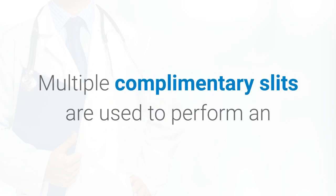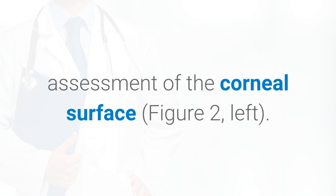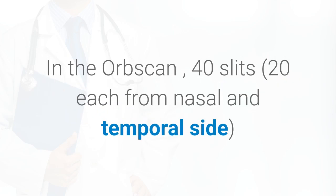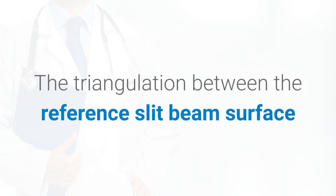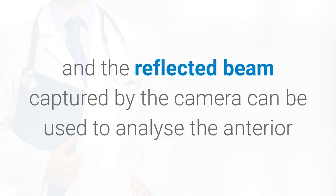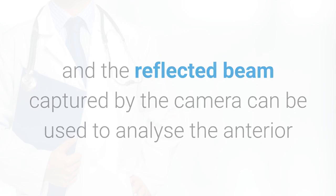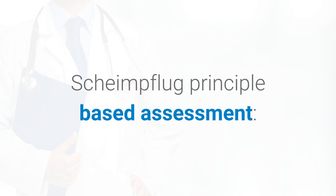Scanning slit elevation evaluation is one of the elevation-based methods for assessment of topography. Multiple complementary slits are used to perform an assessment of the corneal surface. In the Orbscan, 40 slits — 20 each from the nasal and temporal side — are projected on the cornea to assess 240 points on each slit. The triangulation between the reference slit beam surface and the reflected beam captured by the camera can be used to analyze the anterior and posterior corneal curvature and pachymetry.